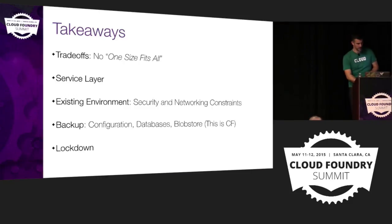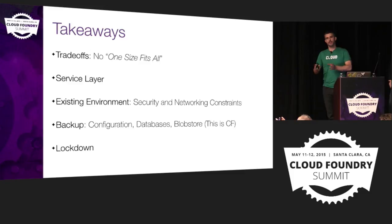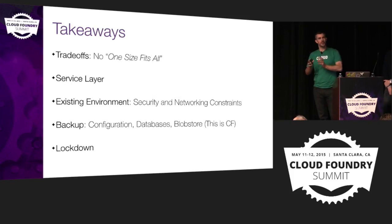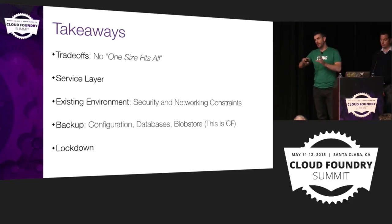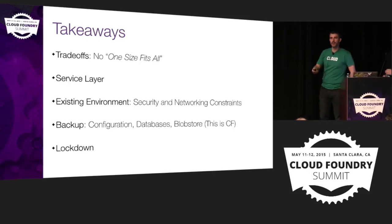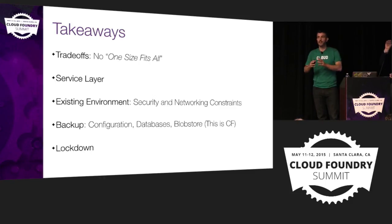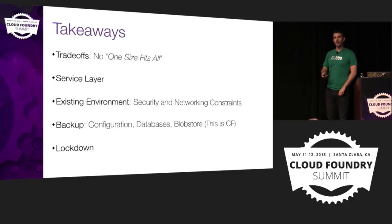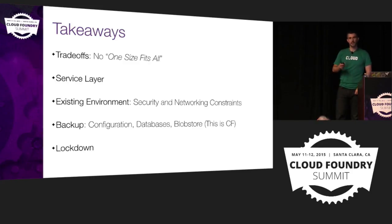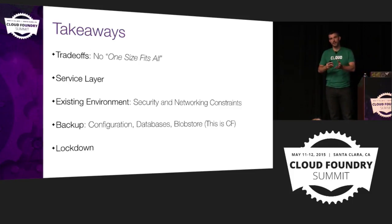Quick takeaways: when deploying Cloud Foundry in a highly available scenario, understand the trade-offs and environmental constraints — there's no one-size-fits-all. It comes down to what level of HA and DR you need. At the service layer, be cognizant of the impact of dual data centers, the type of data, and how you persist, replicate, and keep it concurrent. Be aware of corporate security concerns and networking constraints that shape how you deploy Cloud Foundry. For backup, back up your configuration, databases, and blob store — this is your Cloud Foundry. Finally, think about traffic egress and ingress and lock Cloud Foundry down to make it as secure as possible. Thank you.